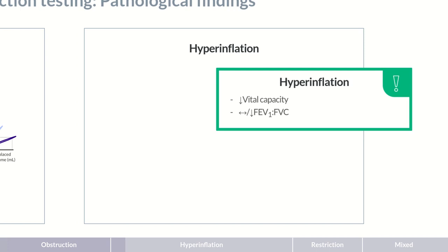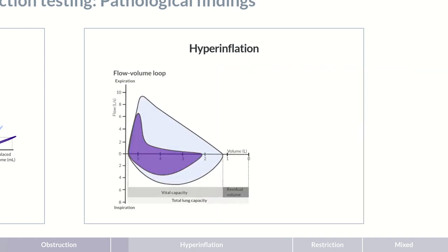Let's look at an example with obstruction, and therefore, a reduced FEV1 to FVC ratio. The dark blue flow volume loop depicts a typical finding in lung hyperinflation, whereas the light blue loop shows a physiological finding. In addition to curve indentation, which we already know from obstruction, a distinct inflection point in the curve can be seen. Do you have an idea of how this transpires?